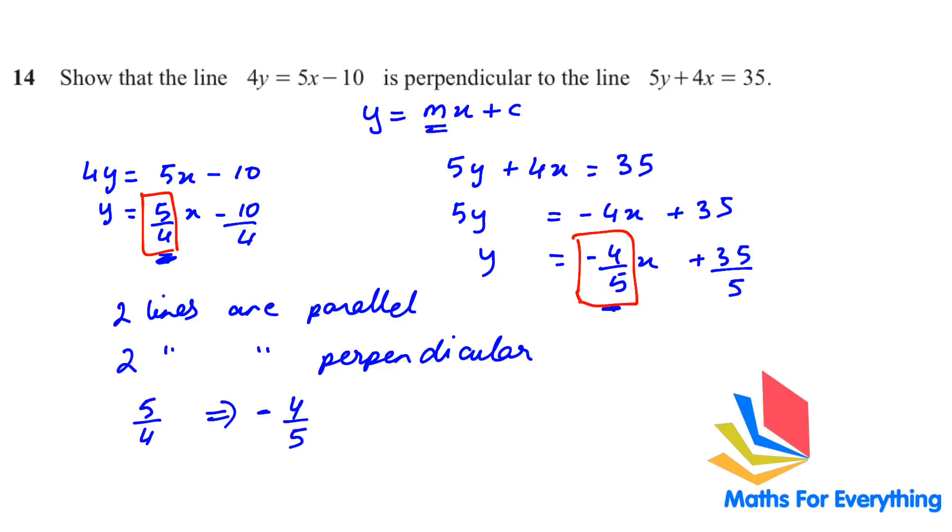Or there is another rule that we use: m multiplied by the perpendicular gradient equals negative 1. Our gradient for the first line is 5 over 4. Multiply by negative 4 over 5 should give us negative 1. If it gives us negative 1, it means it is perpendicular, and it gives us negative 1, therefore it is perpendicular.